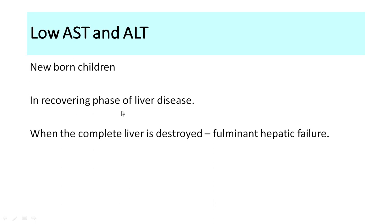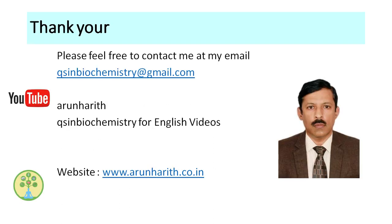Low AST and ALT rarely occur but can be seen in newborns or in people recovering from liver disease where the enzymes gradually return to normal. In fulminant hepatic failure, when there is total destruction of liver cells, AST and ALT may fall to very low levels — as low as 2 to 5 IU/L — because there are no living liver cells left to release enzymes. At this stage the patient is critically ill and near death.